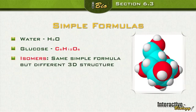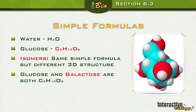An isomer is two molecules that have the same simple formula but a different three-dimensional structure — the arrangement of atoms is different even though they have the same atoms. For example, glucose and galactose are both C₆H₁₂O₆, but the atoms are arranged a little differently.